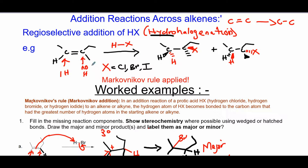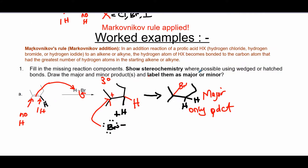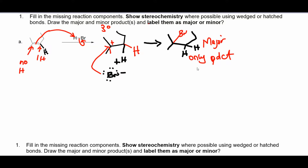You're going to end up with two products because the alkene is planar. The addition could happen from the top face or the bottom face, and that's how you end up with two products. We show stereochemistry going ahead to the reactions.